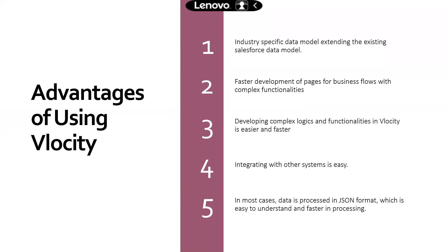Why is Salesforce growing so fast along with major cloud companies like Amazon, Microsoft, or Google? Because they have a strong sales data model — opportunity, leads, contacts, accounts, users — the whole sales process. That's a strong one, and that's why it fits almost every client across domains. Velocity is using that strong data model and building a few other things on top of it. For example, in the telecom domain, whatever I do on the front end, once I click 'create account,' it creates an order record in the back end.